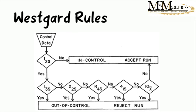But if no — if there's just this one value sitting between 2S and 3S — the next question is whether the previous number is lying in the minus 2S region. If this one was at plus 2S and the previous is between minus 2S and minus 3S, the difference between those two numbers is four standard deviations — an R-4S violation — and you reject that run.